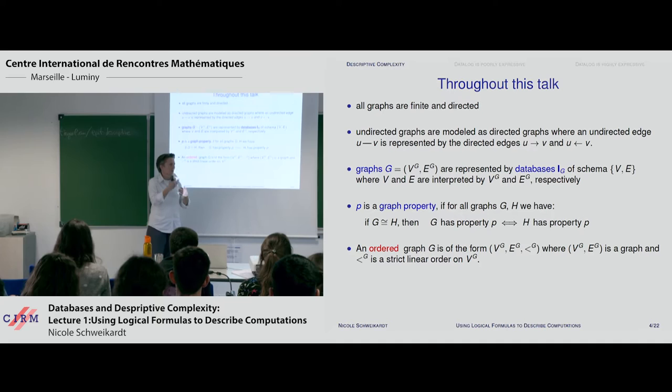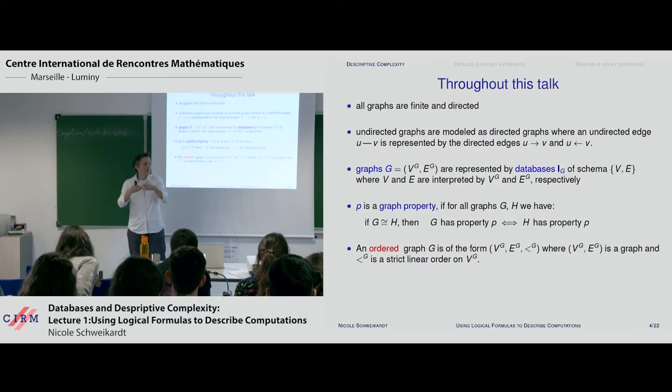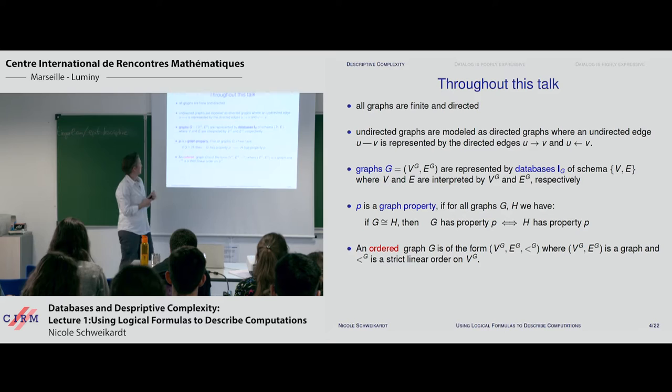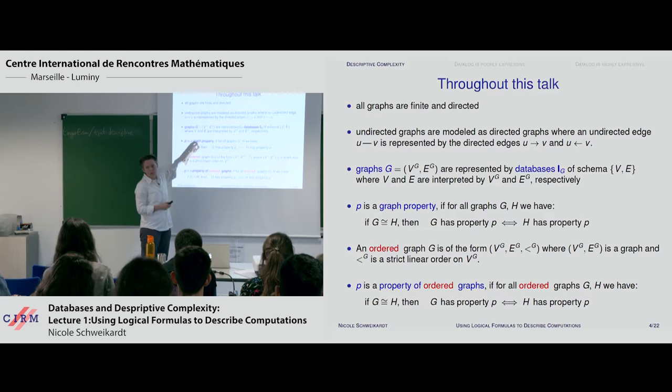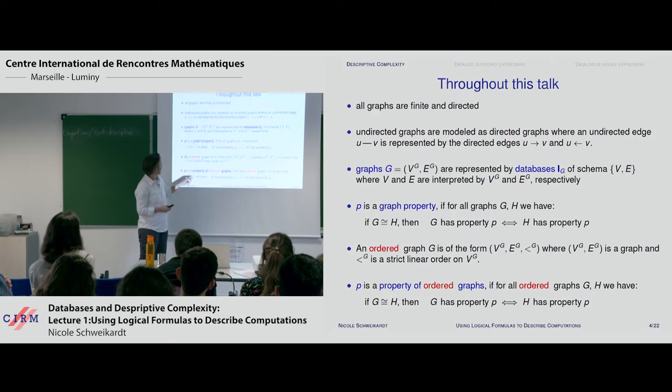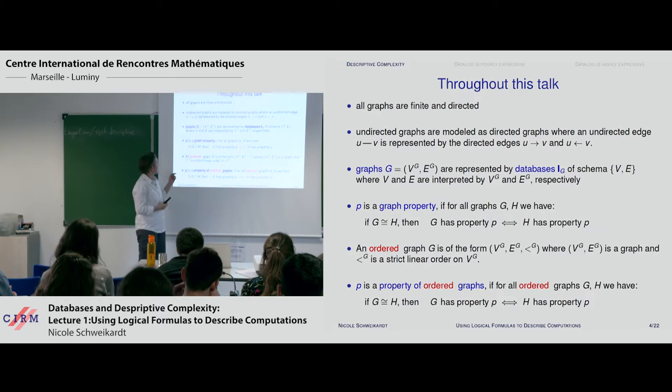Every time you deal with algorithms where you get graphs as input, your input really is an ordered graph: a vertex set, an edge set, and a linear order on the vertices. Your algorithms always refer to this linear order — when you say 'take the next node' or 'take the next edge,' 'next' is defined with respect to the particular order in which you get the input. But what we really want is to think about graph properties and not about properties of ordered graphs.